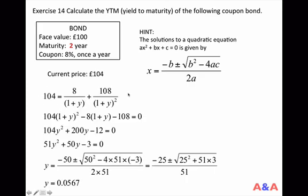The formula is: in one year you receive the £8 coupon, and in two years you receive £100 face value plus the £8 coupon. You discount both with the same yield Y, and the total discounted value should equal the current price of £104. This reduces to a quadratic equation. Using the quadratic formula, the solution is 0.0567 — so 5.67% is the yield to maturity of this coupon bond.